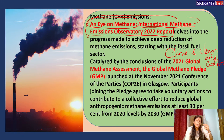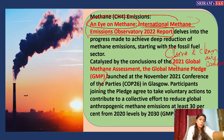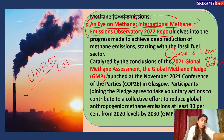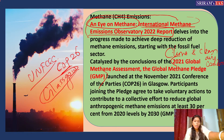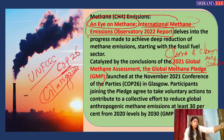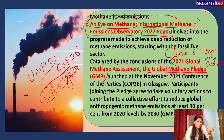In 2021, CCAC and UNEP together released a report called the Global Methane Assessment. This was proposed at COP26 in Glasgow — the 26th Conference of Parties under UNFCCC. At that conference, the Global Methane Pledge (GMP) was first proposed.